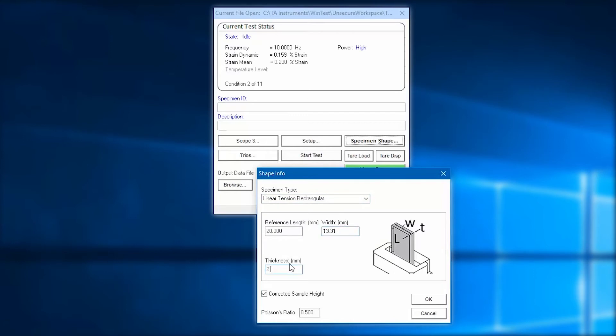Now, instead of trying to precisely measure the specimen length after I installed the sample, I click corrected sample height. This changes the length here to reference length. This is where I enter the height of my gauge block used when taring my displacement channel.